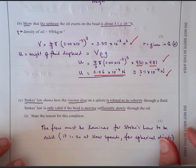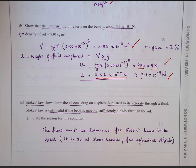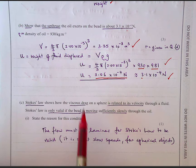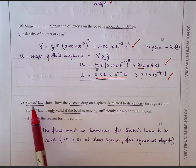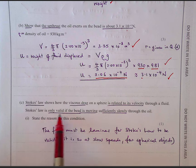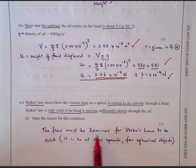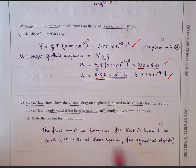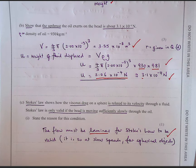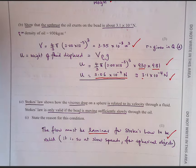Stokes' law relates viscous drag on a sphere to its velocity through a fluid, but is only valid if the bead moves sufficiently slowly. The reason for this condition is that the flow must be laminar — not turbulent. As long as you include the word 'laminar' or state 'not turbulent', you get the mark.